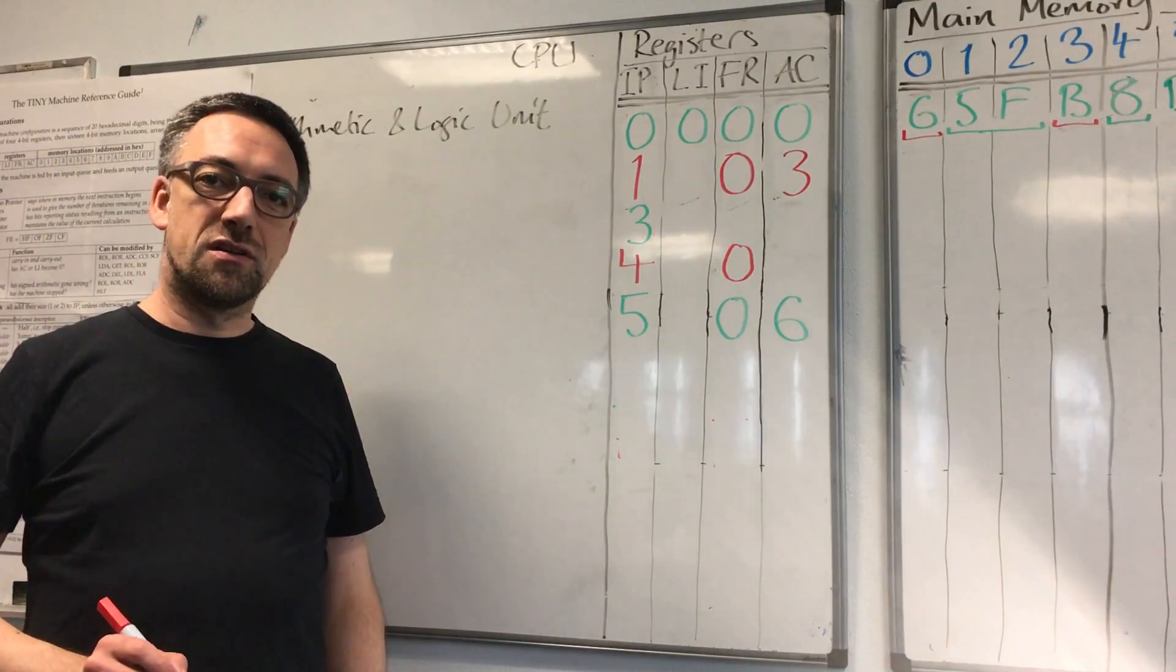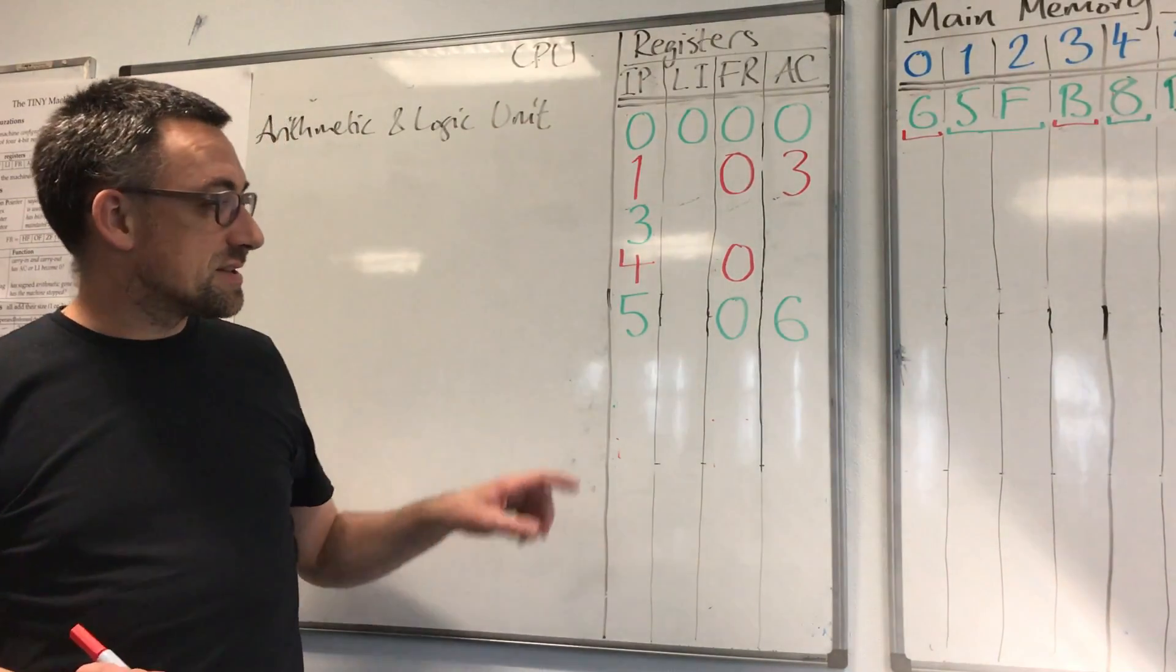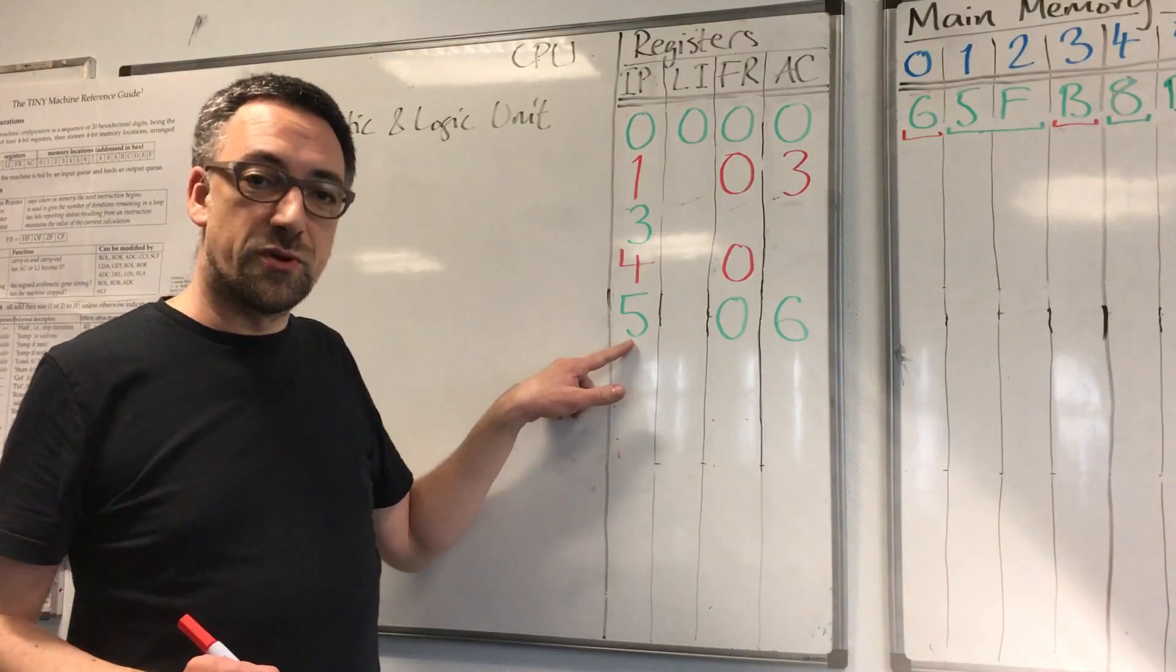Let's have another fetch-execute cycle of the tiny machine. In this configuration, the instruction pointer is 5.